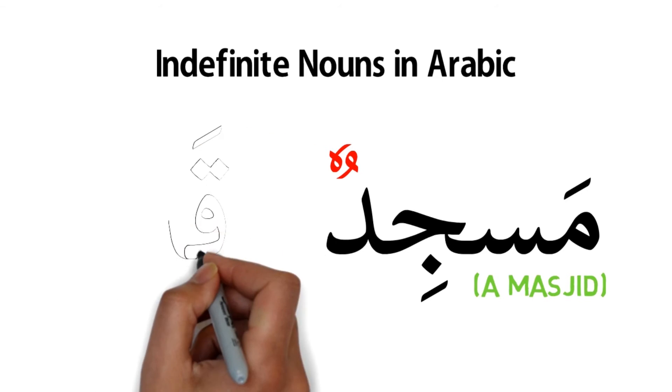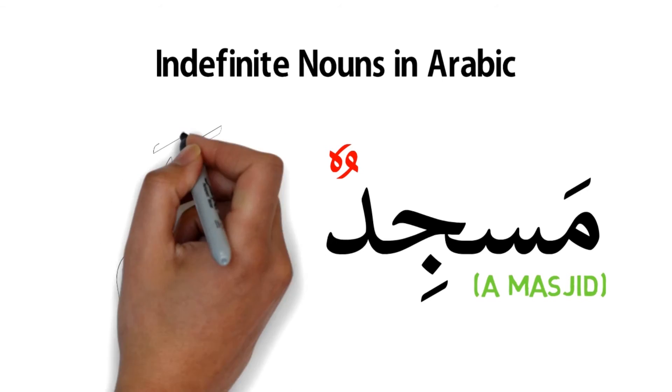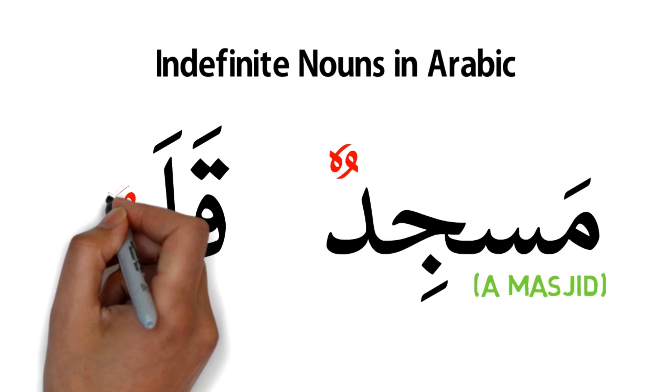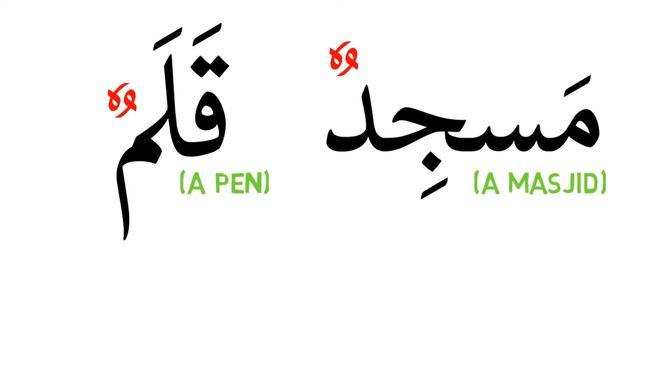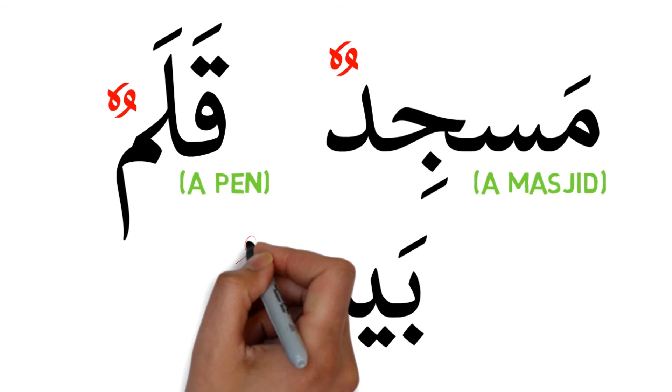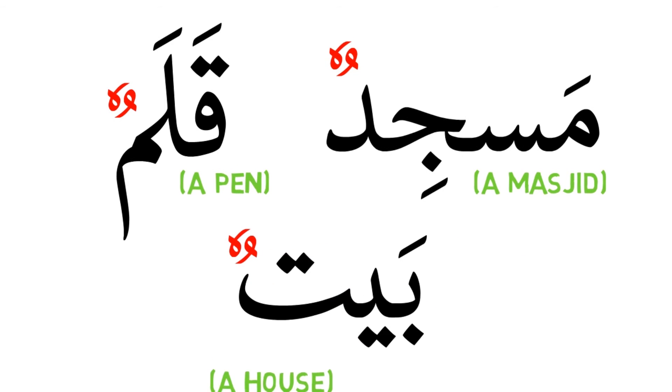The next word, qalamun, means a pen. Baytun means a house.